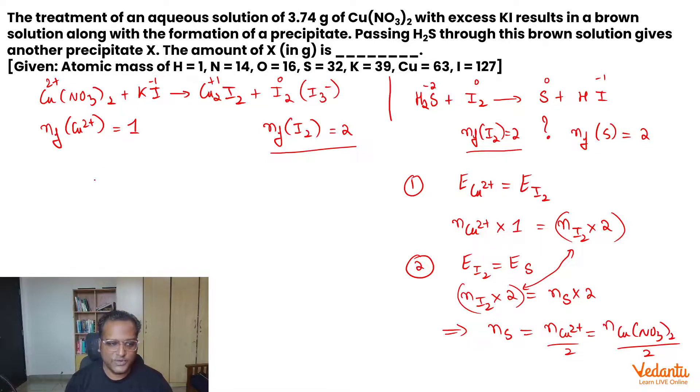We can now find number of moles of sulfur very easily. What is the number of moles of cupric nitrate? 3.74 and the molecular weight comes as 187 into half. These are the moles of sulfur. He is asking you the weight of sulfur, right?